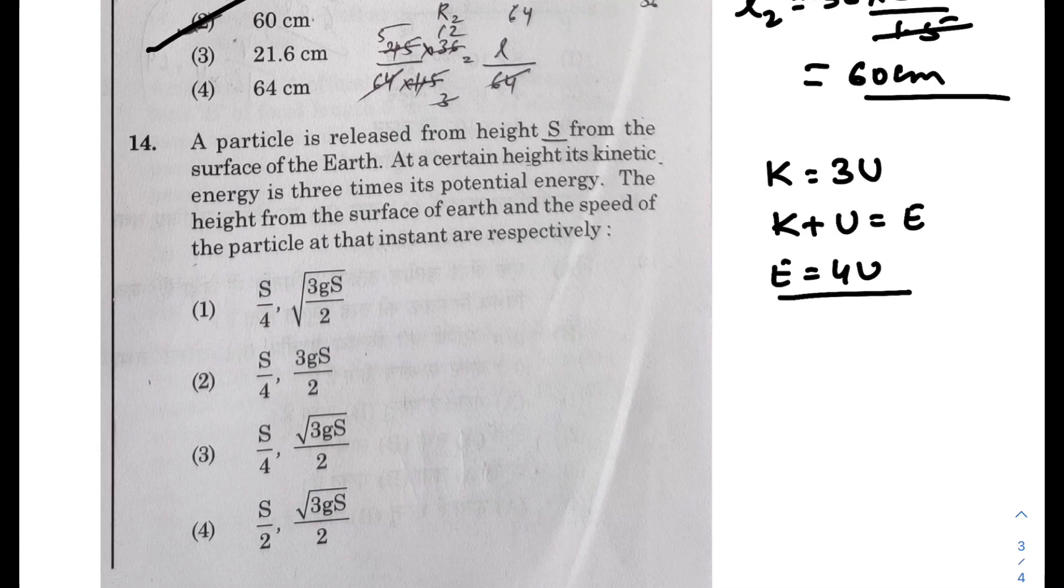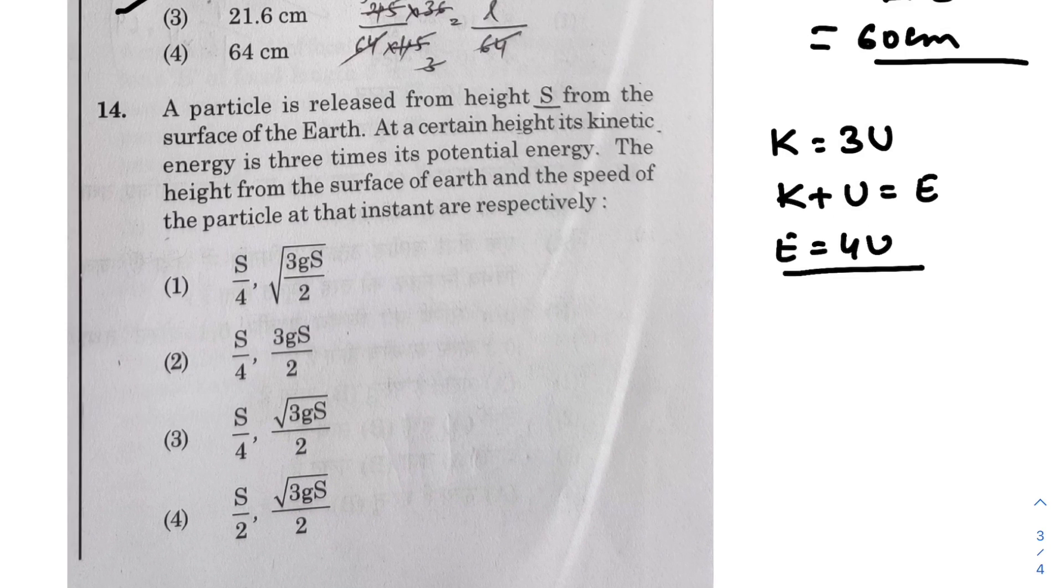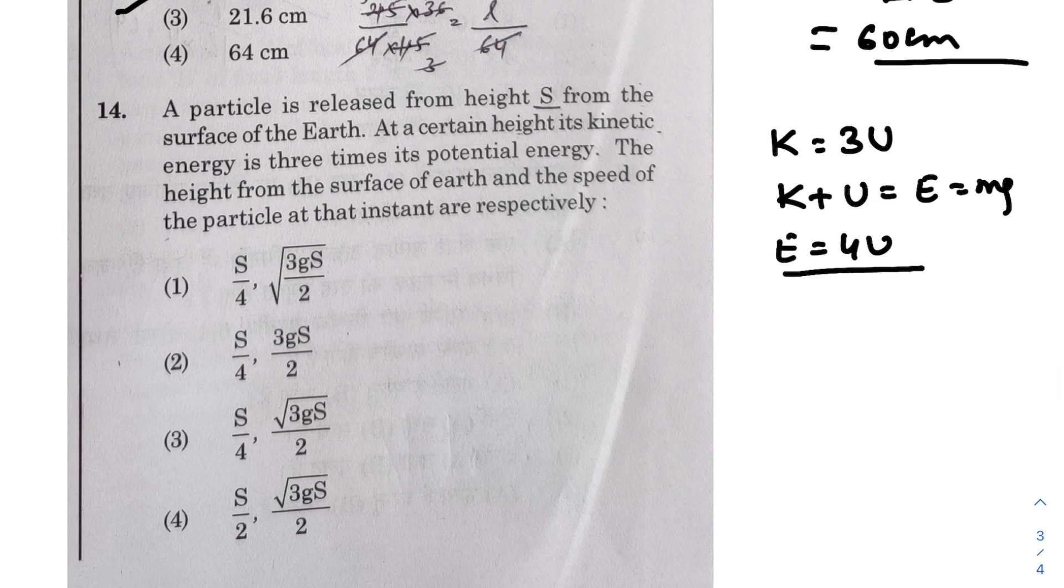So it means the energy - one-fourth is potential, we can say, because K is three-fourths of U. So that means three-fourths of the energy is kinetic. So three-fourths of the total energy is kinetic. So I think because it's a question in the NEET, they have simply taken it to be mgh.